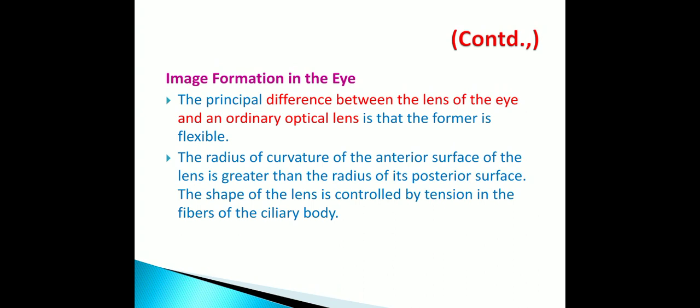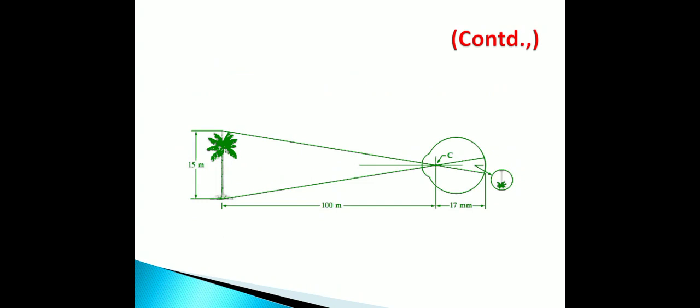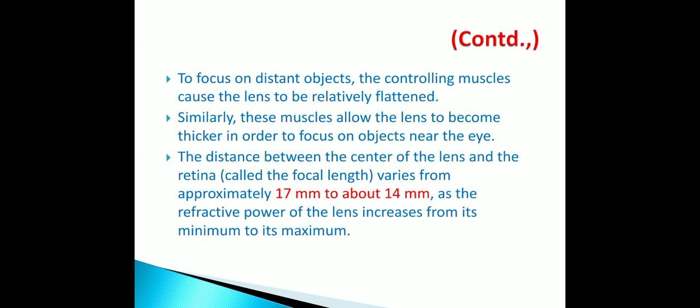Now for image formation in the eye. The principal difference between the lens of the eye and an ordinary optical lens is that the former is flexible. The radius of curvature of the anterior surface of the lens is greater than the radius of its posterior surface. The shape of the lens is controlled by tension in the fibers of the ciliary body. To focus on distant objects, the controlling muscles cause the lens to be relatively flattened; for near objects, the muscles allow the lens to become thicker. The distance between the center of the lens and the retina varies from 14 mm to 17 mm, and the refractive power of the lens increases from its minimum to maximum accordingly.